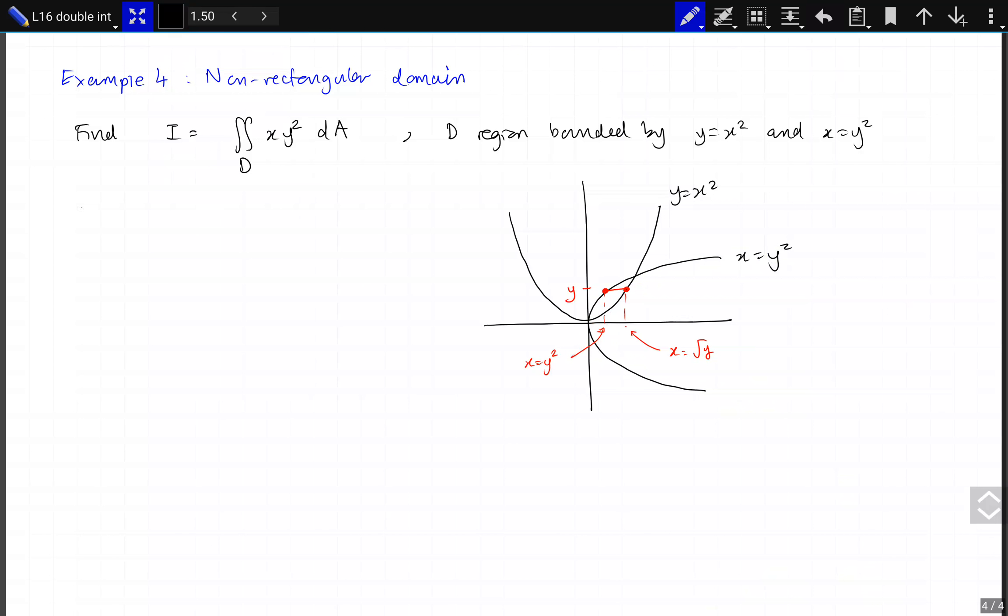Therefore, this integral equals the integral as y runs between 0 and 1. You can see the actual limits here for the domain at 0,0 and 1,1. The integral of the integral as x runs between, as we said, from y squared up to root y of our initial function x times y squared.